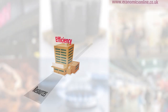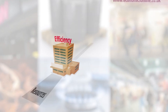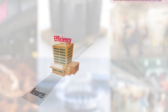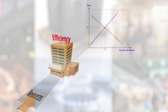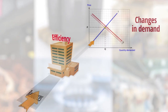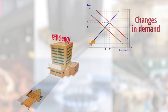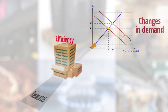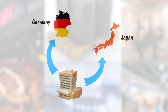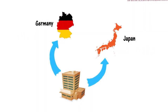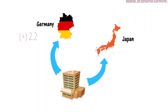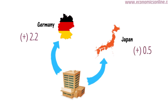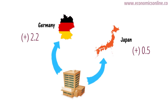Economists are interested in income elasticity because knowing YED helps firms and governments plan their output so that they can respond effectively to demand changes and achieve an efficient use of scarce resources. For example, if a US firm produces a product to be sold in Germany and Japan, and its market research suggests that the YED in Germany is 2.2 and in Japan is 0.5,